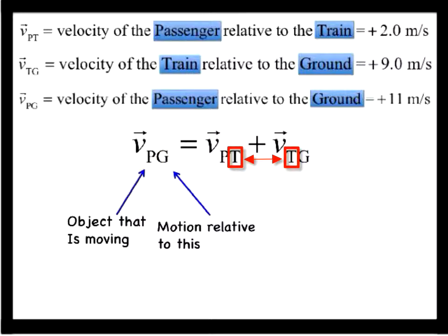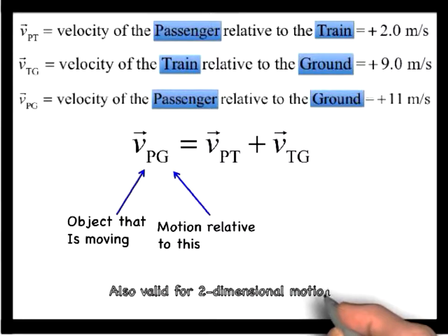The third subscript, in this case T, is the inner subscript on the right side that bridges the other two together. While this vector equation was written explicitly for the simple collinear example of the passenger walking along the train, it is also valid for two-dimensional motion.